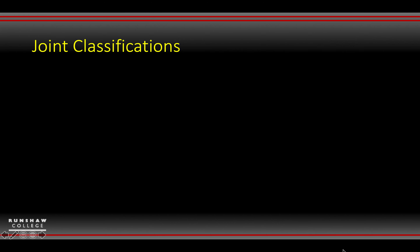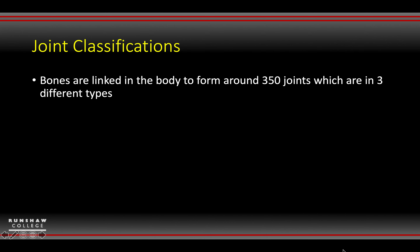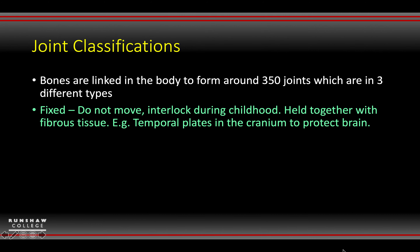Joint classifications. We've got a different range of them. In terms of bones that form joints, we've got about 350 joints in the body, and these come in three different types.